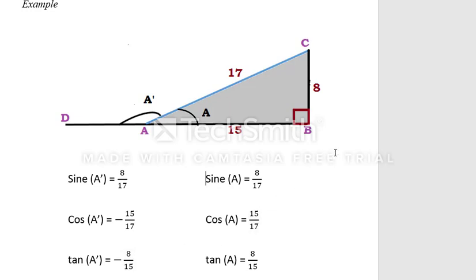So this is how we have applied the conclusions we learned from the previous slides about the trigonometric ratios of acute and obtuse angles — sine, cosine, and tangent.